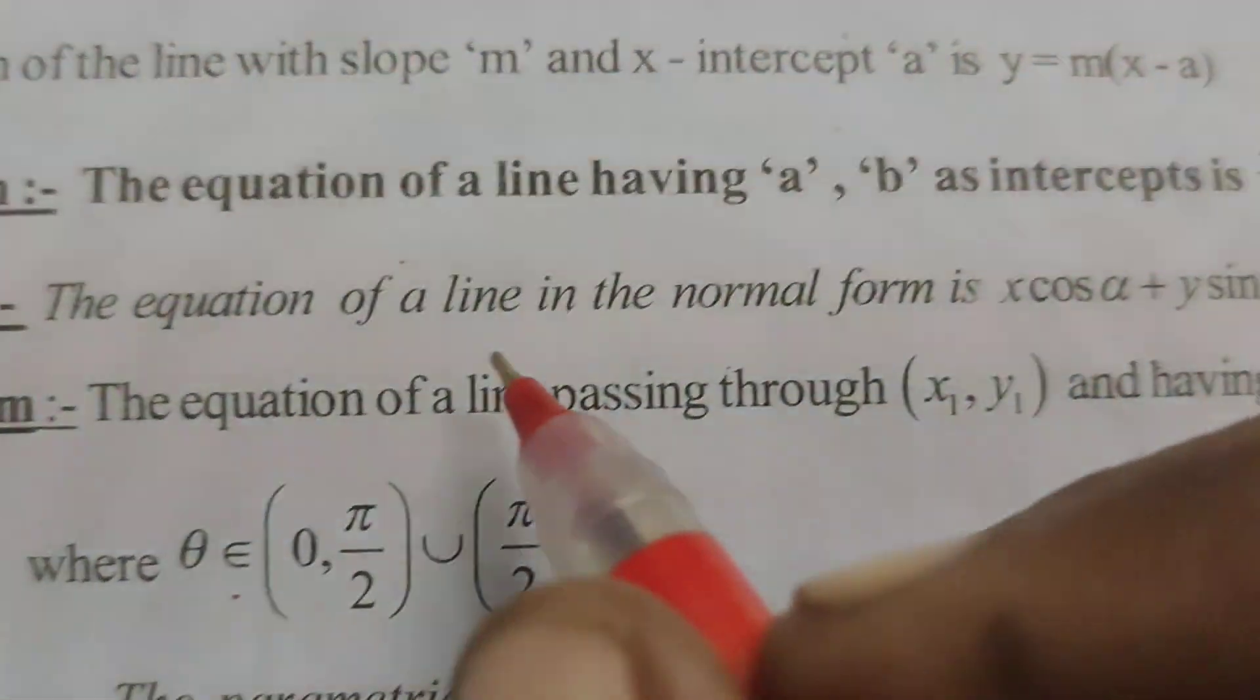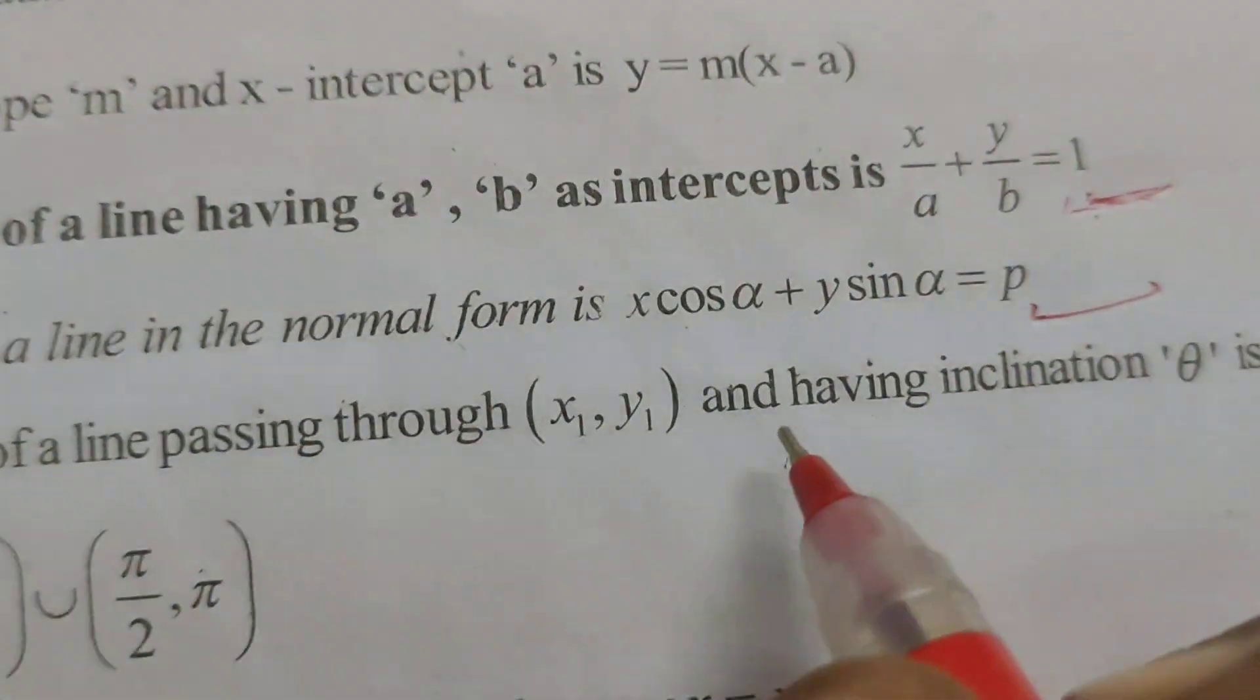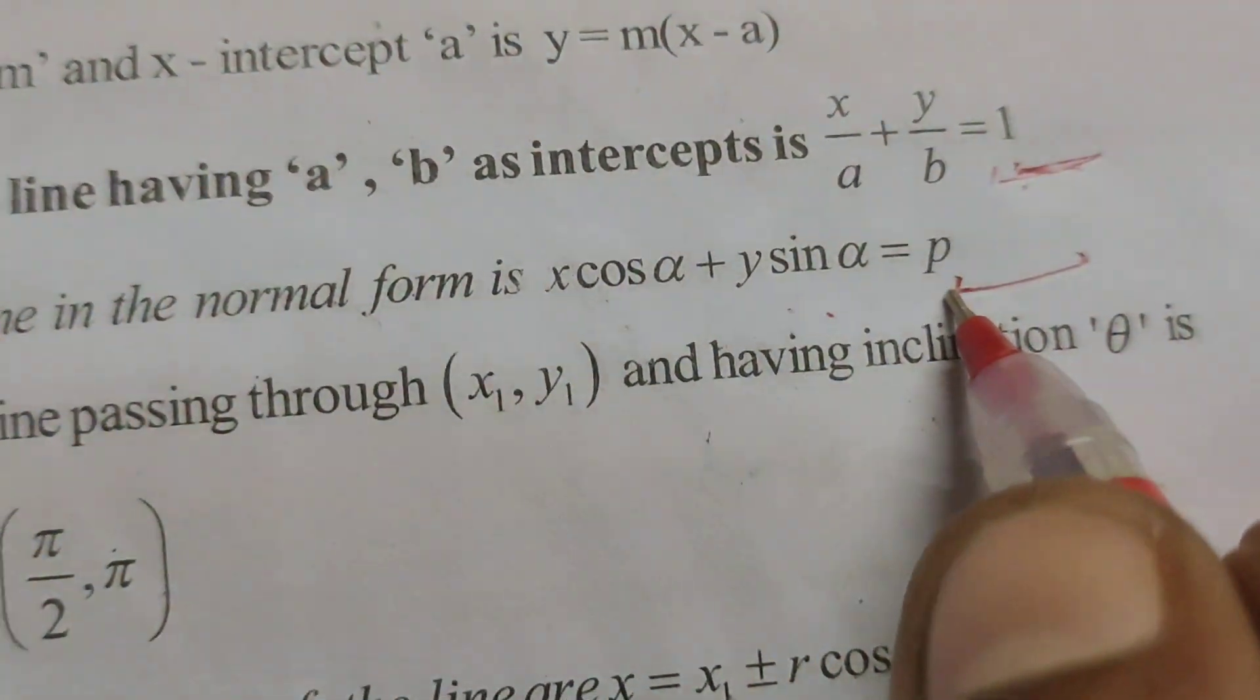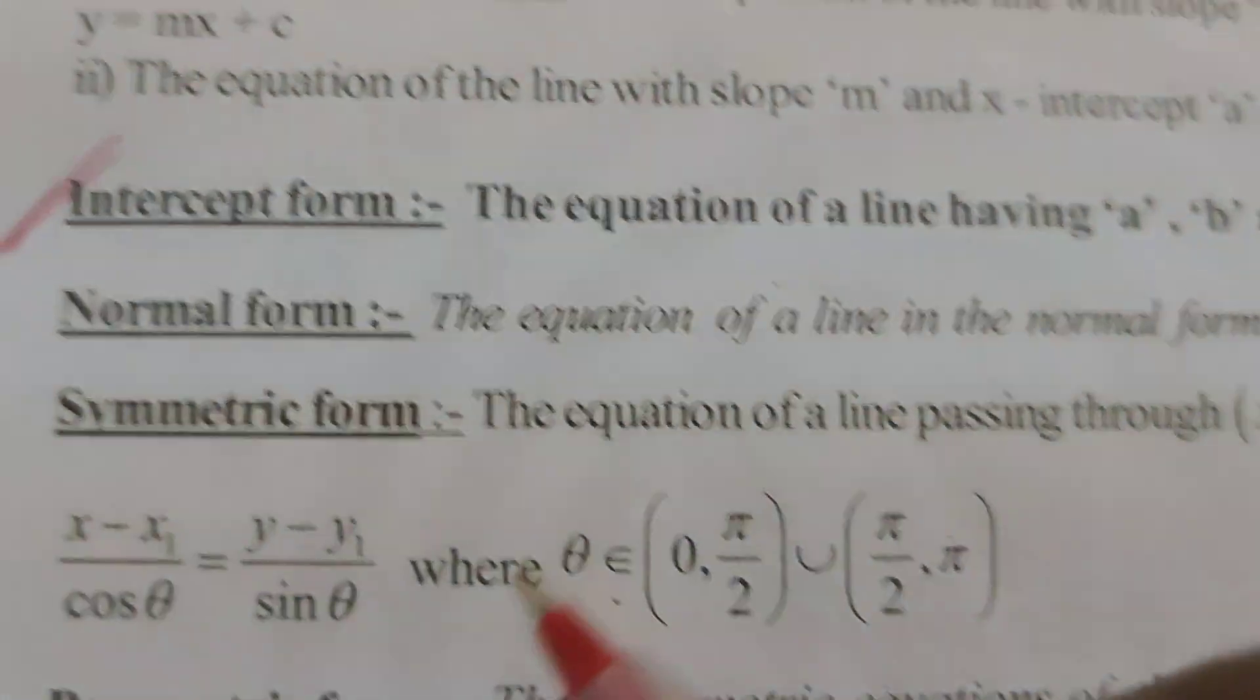Next, the normal form. The equation of a line in the normal form is X cos alpha plus Y sin alpha equals to P.